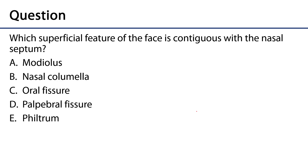That leads us to our assessment question for this video: which superficial feature of the face is contiguous with the nasal septum? The nasal septum is the feature dividing the nasal cavity. It has a few parts: the perpendicular plate of the ethmoid bone, a portion of the vomer, and the septal cartilage. But what is the fleshy external feature contiguous with it?